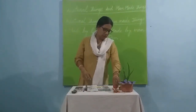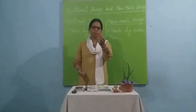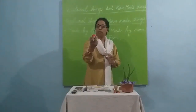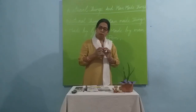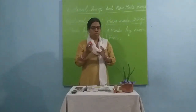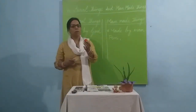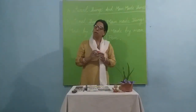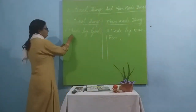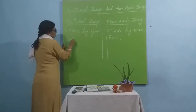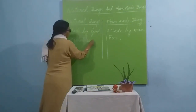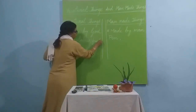Now let us take the example of tomatoes or vegetables and fruits. Can human beings make tomatoes, potatoes, or mangoes? No. These vegetables and fruits are made by God, so they are natural things.